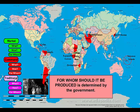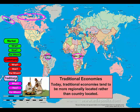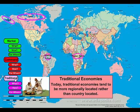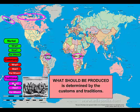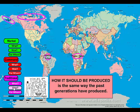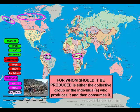The third type of economic system is a traditional economy. Today, traditional economies tend to be more regionally located rather than country located. Go ahead, stop the video and look at the map. Traditional economies determine what is going to be produced by customs and traditions. How it should be produced is the same way past generations have produced the product. For whom should it be produced is either the collective group or the individuals who produced it and then consume it.